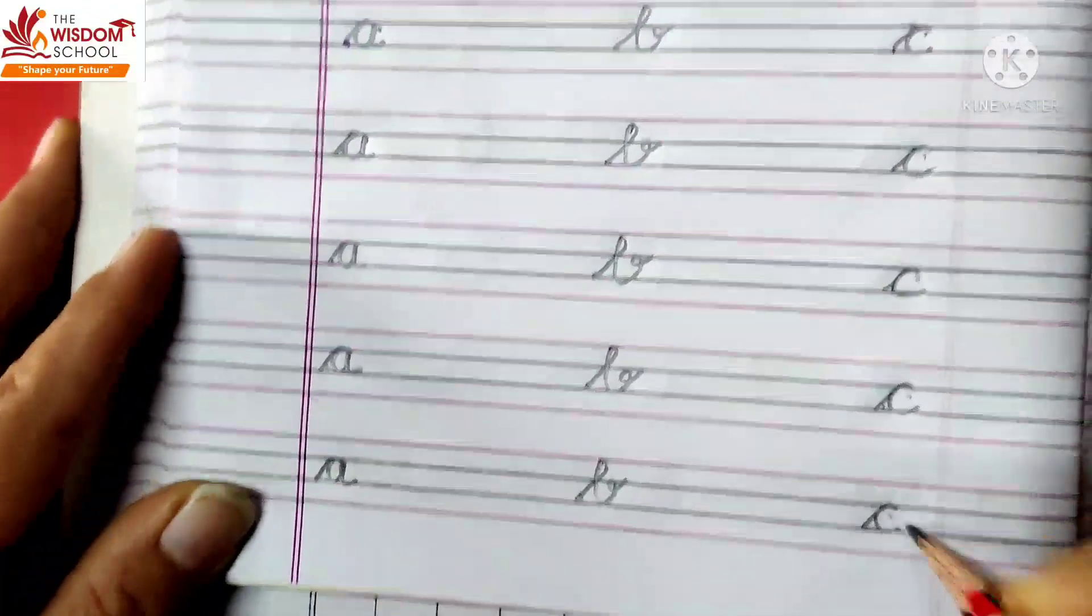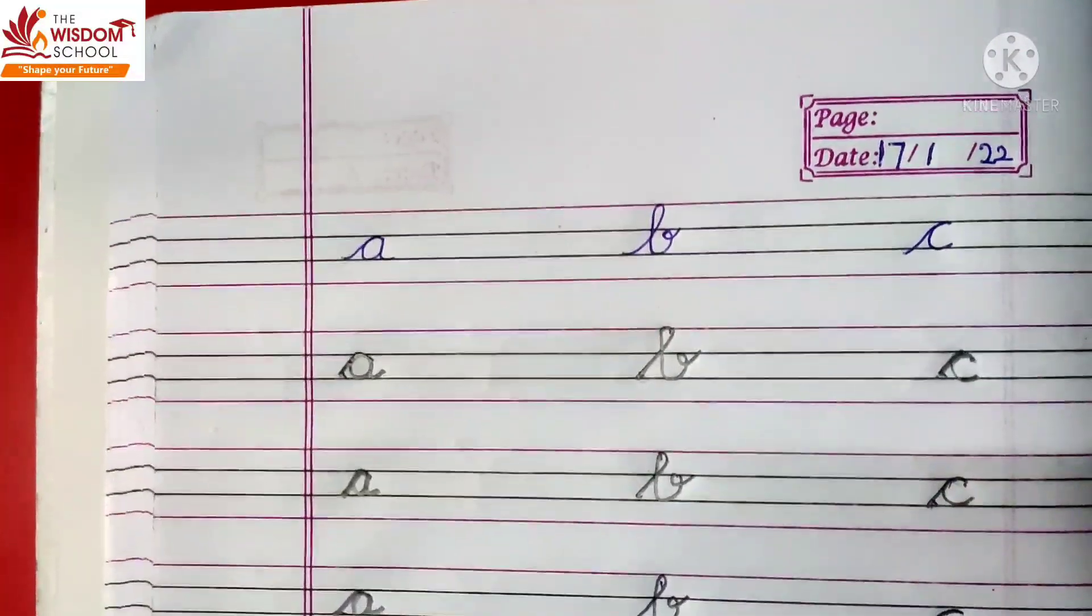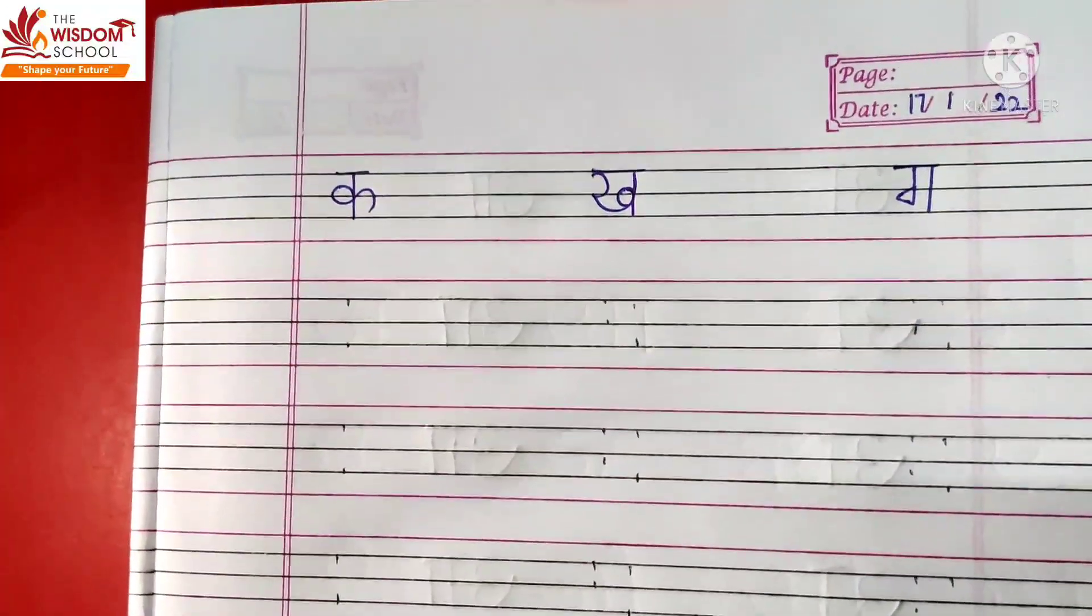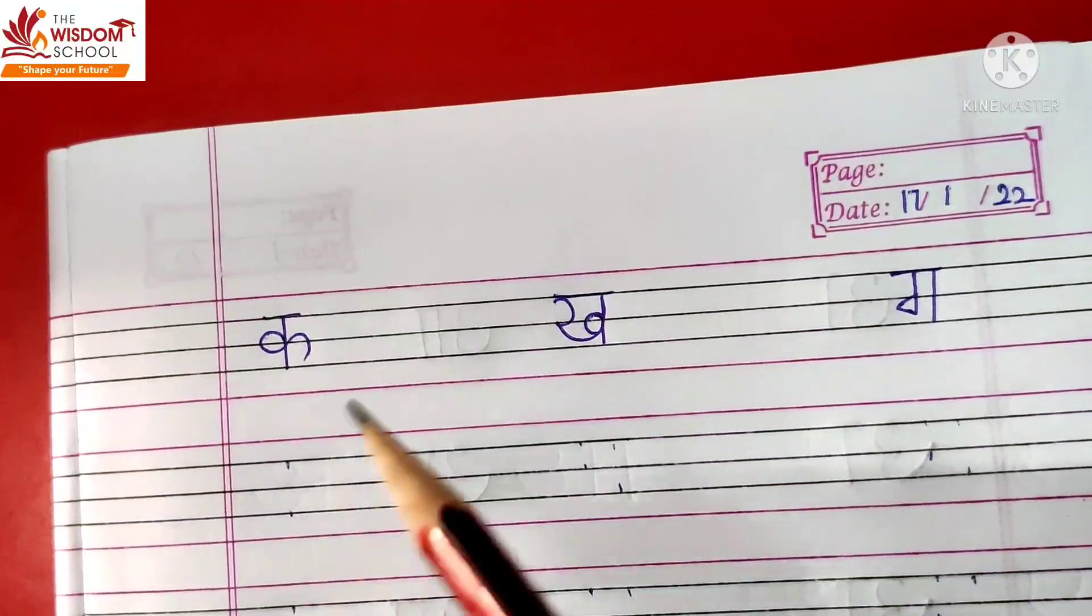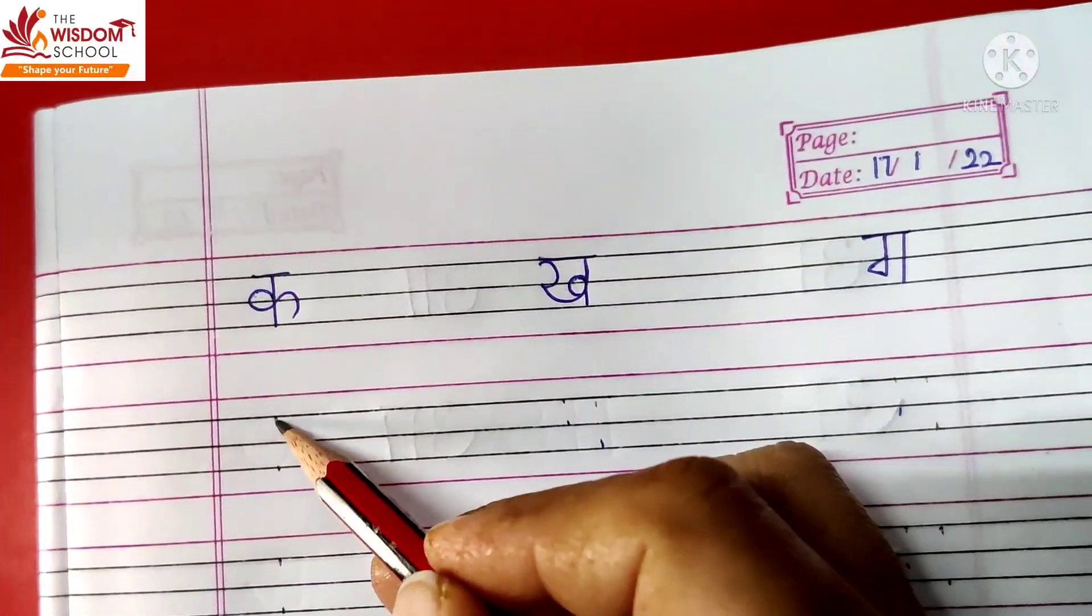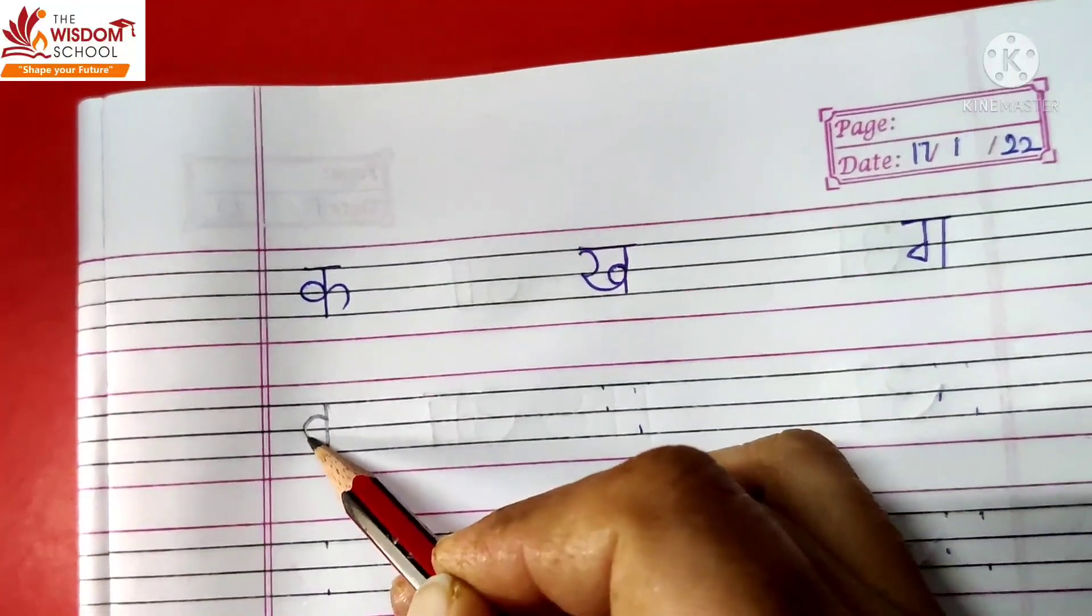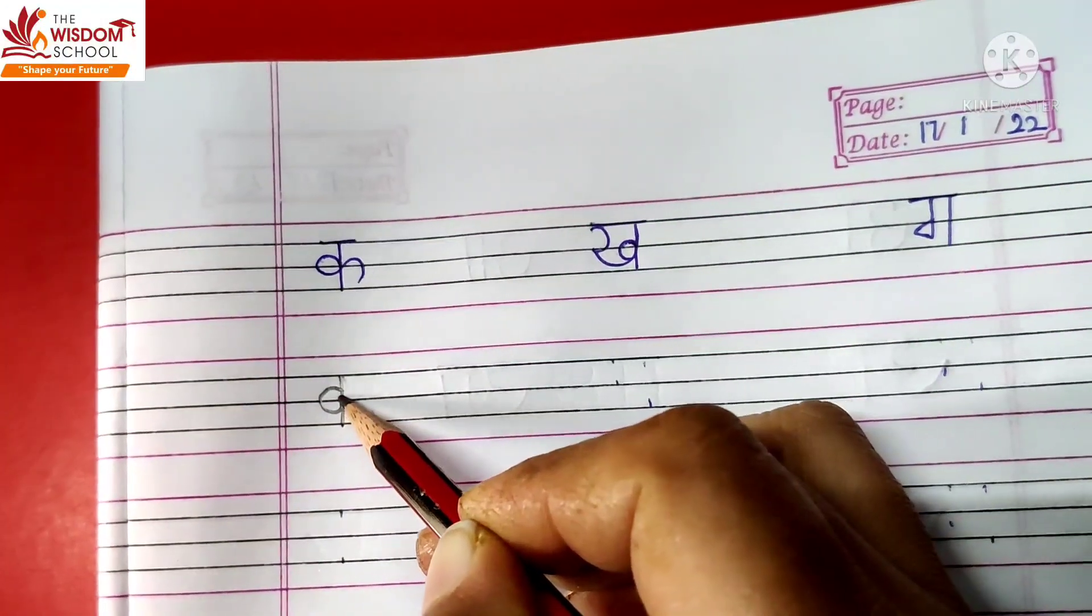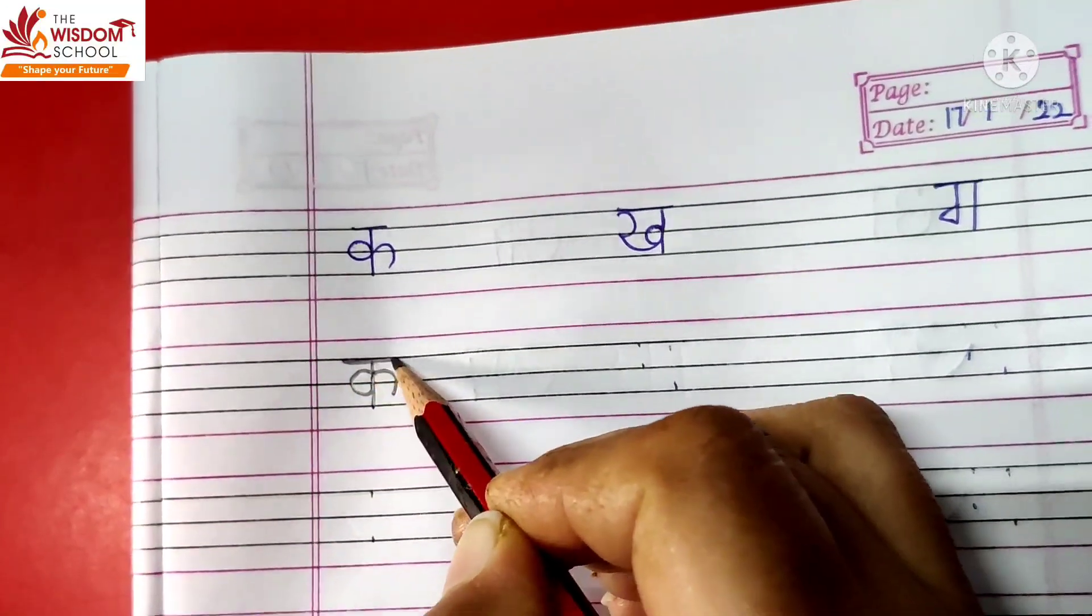So, you have to practice these three letters in English and in Hindi, we will do three vyanjan, ka, kh and ga. Ka, how do you make it? First, standing line. Then, you have to put a curve in the middle. Then, you have to put a curve in the middle. So, this is called ka.